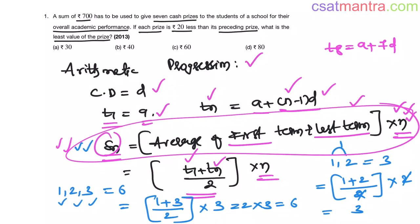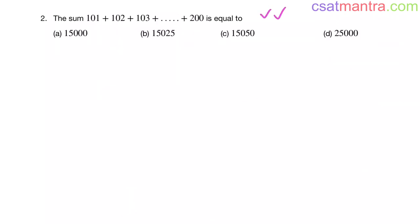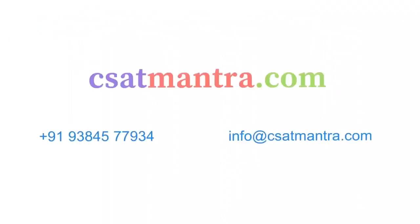After 10 minutes of explaining this, I believe you won't forget it in your lifetime. Now solve this problem — those who want to try manually can try, otherwise use the formula: average of first term and last term into number of terms. Here the number of terms is 100. The answer to this question will be posted at 7 PM in our Telegram channel. To know more about the course, visit csatmantra.com. Feel free to call or mail us. Thank you.